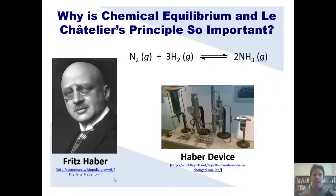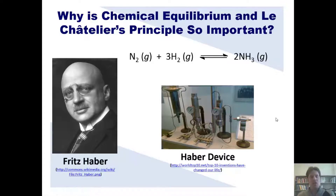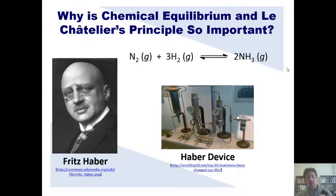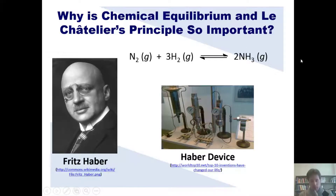Haber didn't have a magic hand, but he had his knowledge of physics and Le Chatelier's principle. He invented the Haber device, which had a warm chamber containing N2 and H2 gas where equilibrium was established, connected to a second chamber cooled to below negative 78 degrees Celsius. At that cold temperature, NH3 condenses into a liquid. A valve could then be opened to drain off the liquid NH3, and once closed, the N2 and H2 continued circulating — prompting the equilibrium to restore balance by forming more NH3.